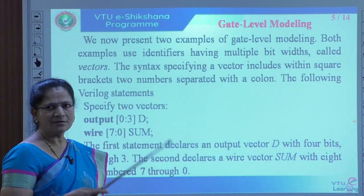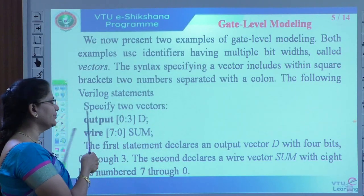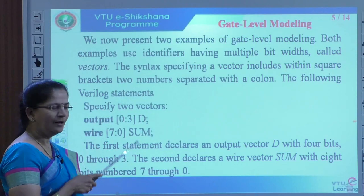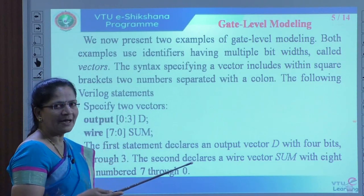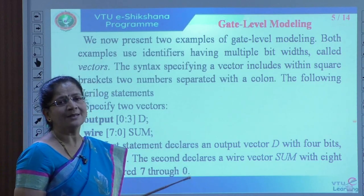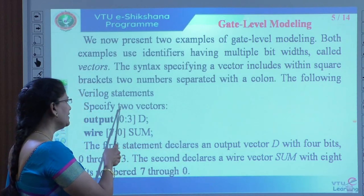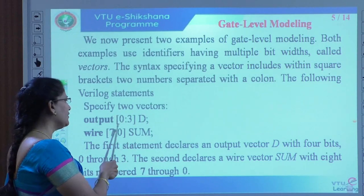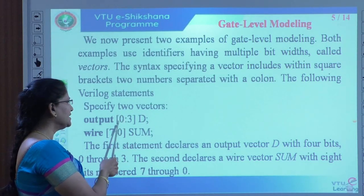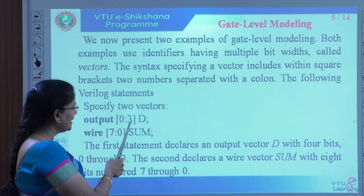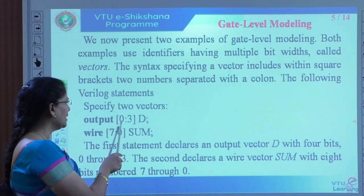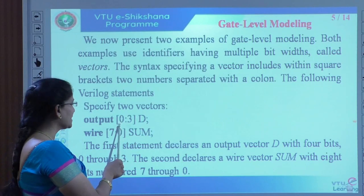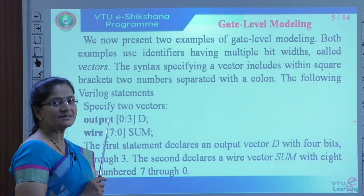Whatever variable you are defining — whether it is an input variable or an output variable — you need to define that variable with the keyword, and after that specify which variable has more than one bit, defined with a vector or array. We call it within square brackets. We define it — starting with 0, colon, and what is the last range. The starting indicates the most significant bit, and this one is the least significant bit.